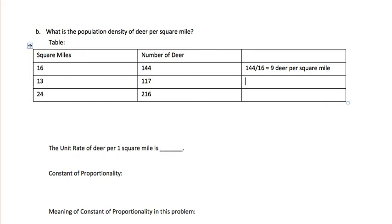In the second sample, 117 divided by 13 also gives us 9 deer per square mile. And in our third sample, 216 divided by 24 is also 9 deer per square mile. So the unit rate of deer per one square mile is 9.